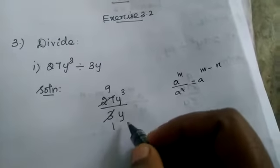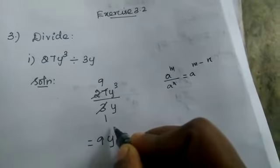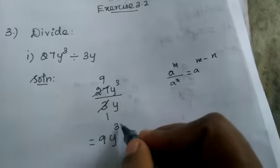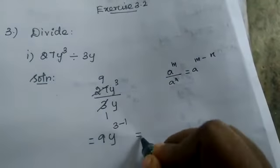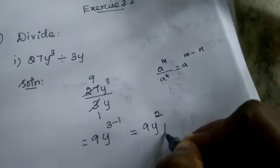Here y³ divided by y. If there is no value means we take it as 1, so 3 minus 1. So answer is 9, 3 minus 1 means 2, 9y². This is the answer. Now see the next sum.